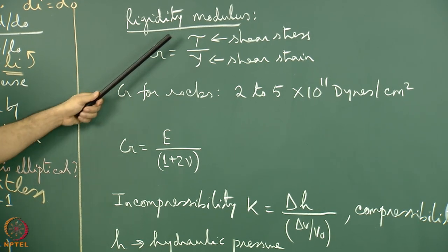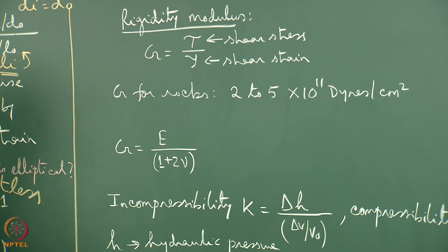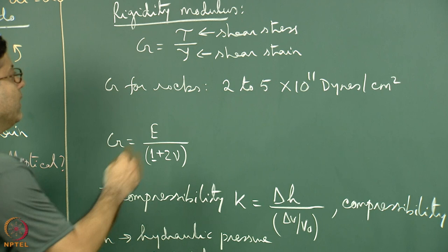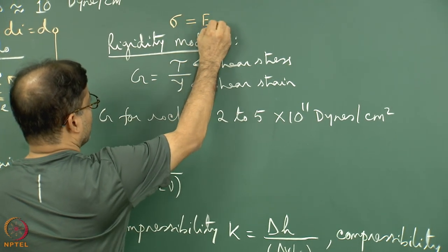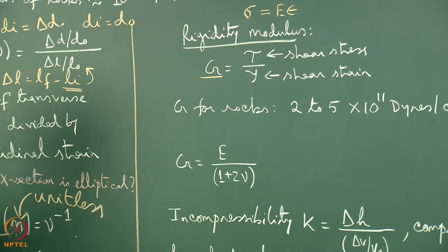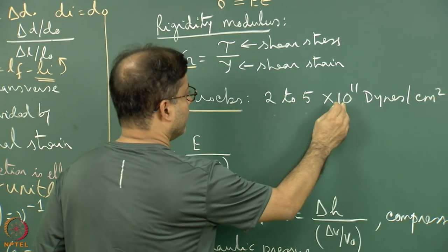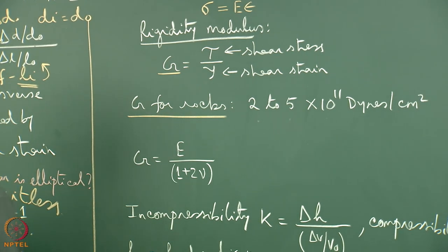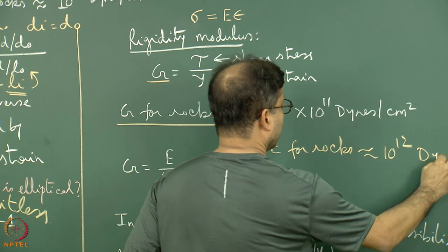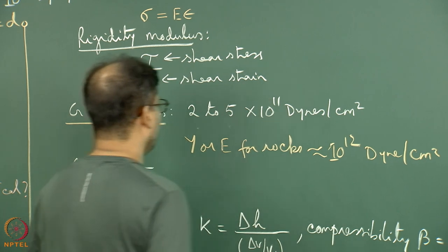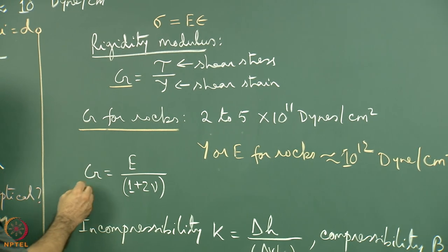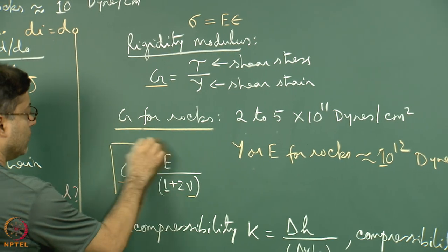The rigidity modulus G is defined as shear stress τ divided by shear strain γ — shear stress is proportional to shear strain with G as the proportionality constant. G's presence leads to change in shape of the body. For rocks, G varies from 2 to 5 × 10¹¹ dyne/cm². Young's modulus E is generally larger than G, and there is a relationship among G, E, and Poisson's ratio ν.